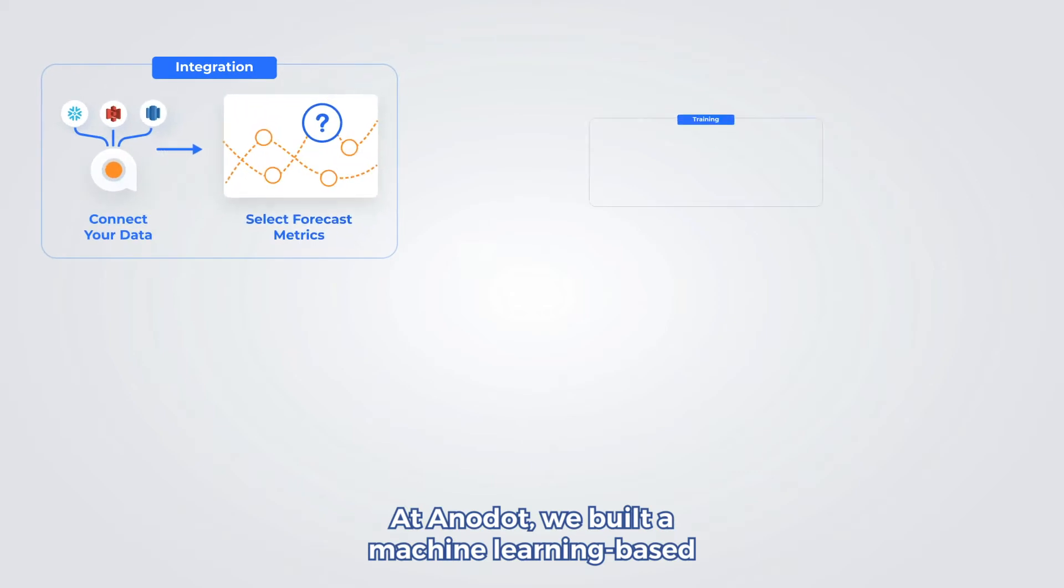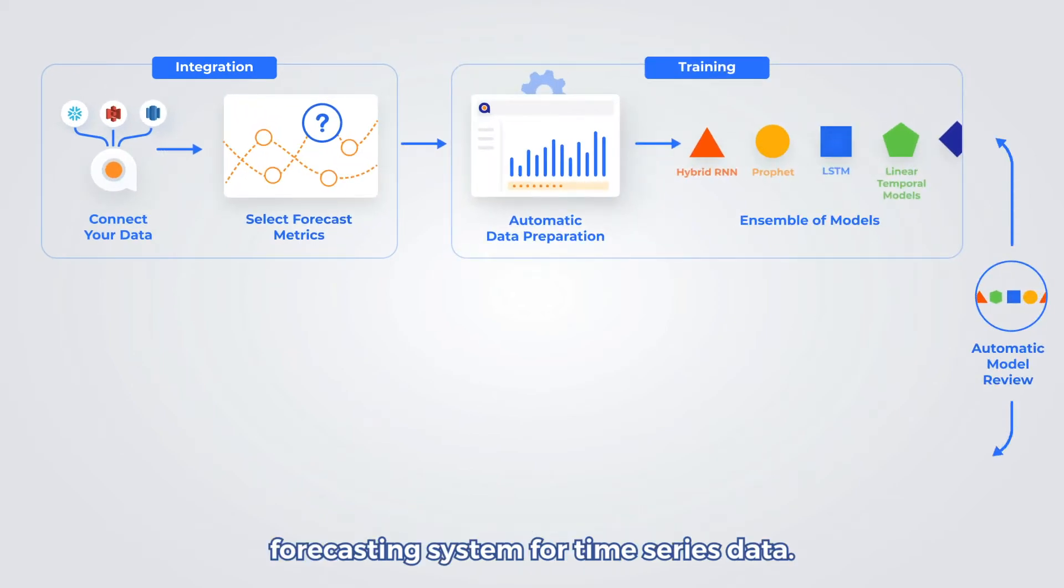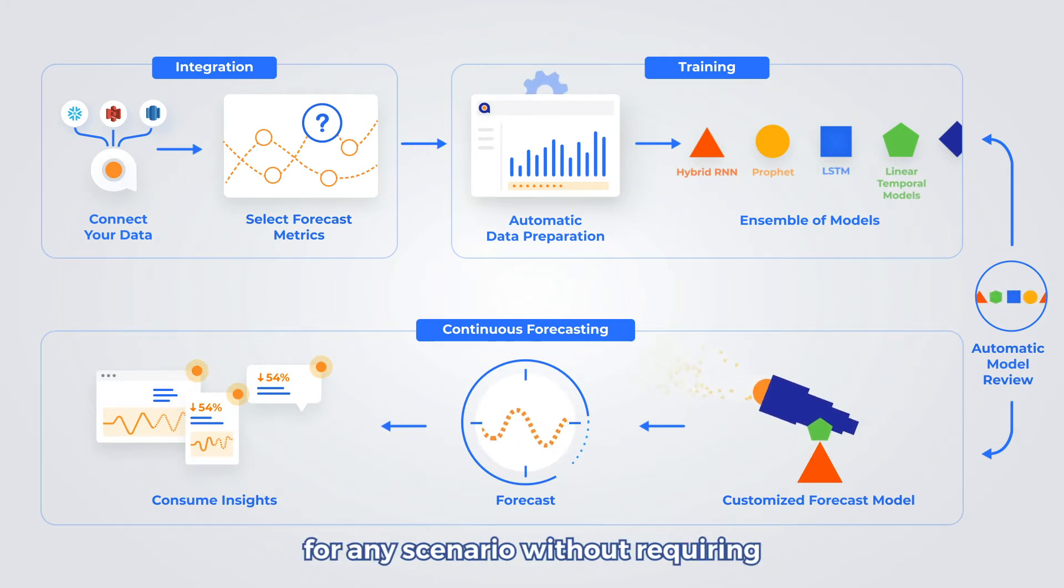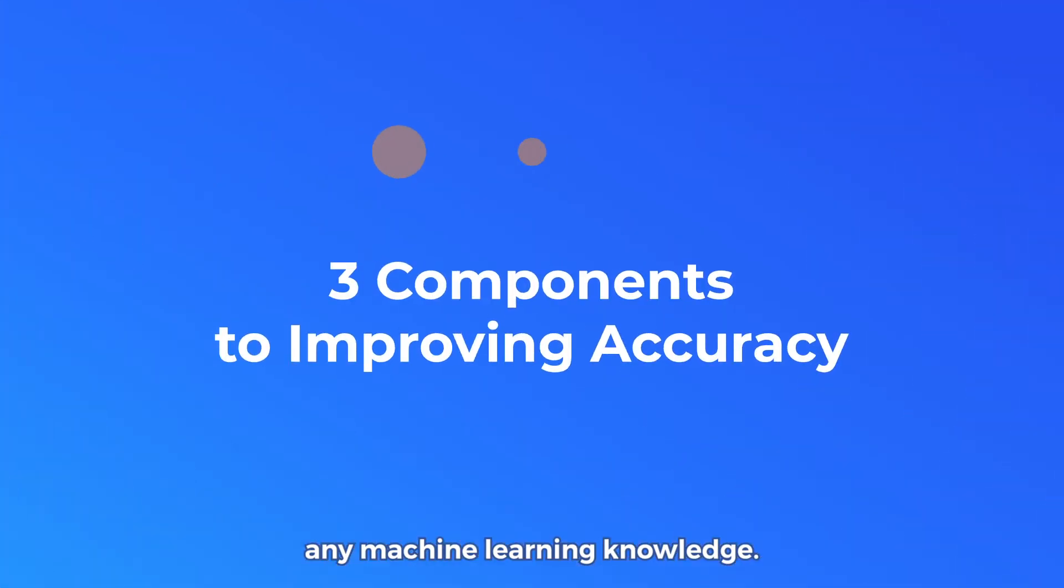At Anodot we built a machine learning based forecasting system for time series data. The system automatically produces accurate forecasts for any scenario without requiring any machine learning knowledge. But what were the main challenges we had to overcome to create an accurate forecasting system?